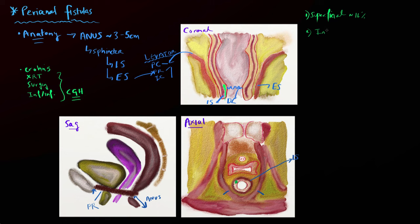The next type is one of the more common fistulas — the inter-sphincteric fistula. With these fistulas, the blocked anal gland goes through the internal sphincter and escapes through the little fat pad between the internal sphincter and the external sphincter. These are fairly common and can present as a simple tract, or with multiple tracts or abscesses associated with them. It's important to recognize those multiple tracts or abscesses in the context of an inter-sphincteric fistula.